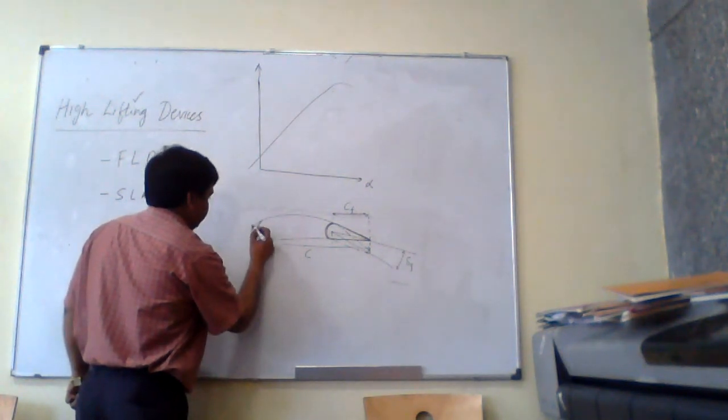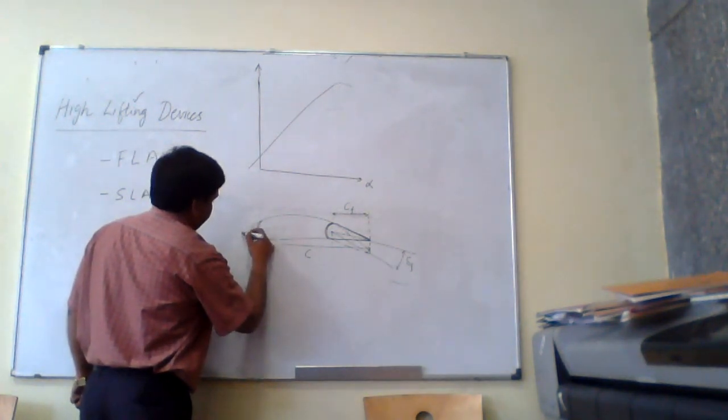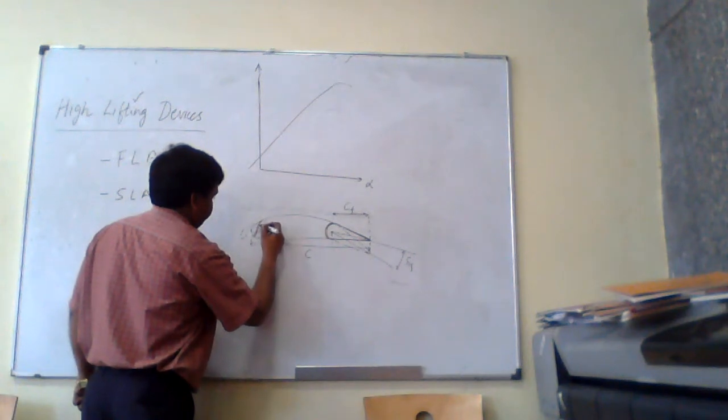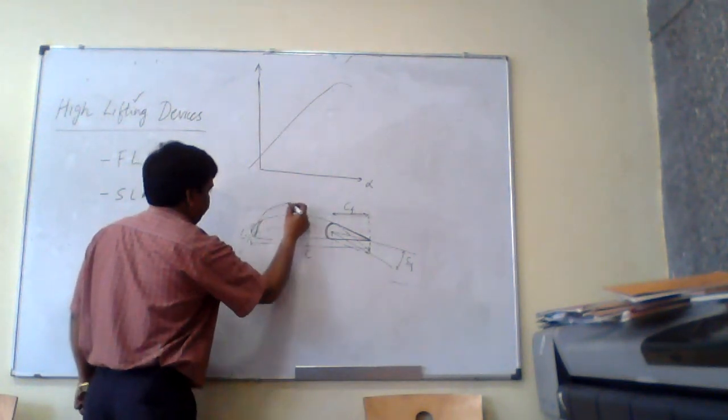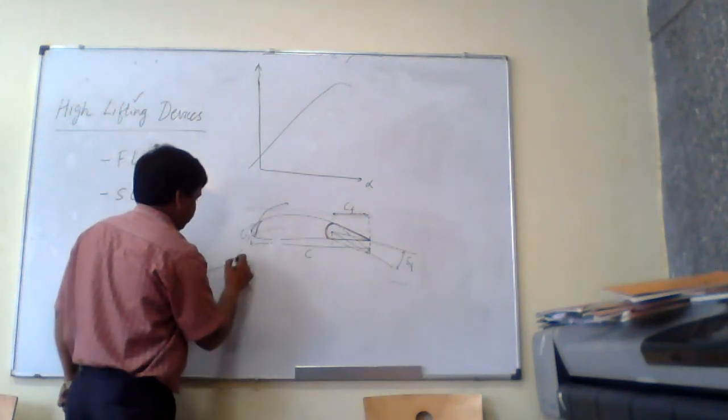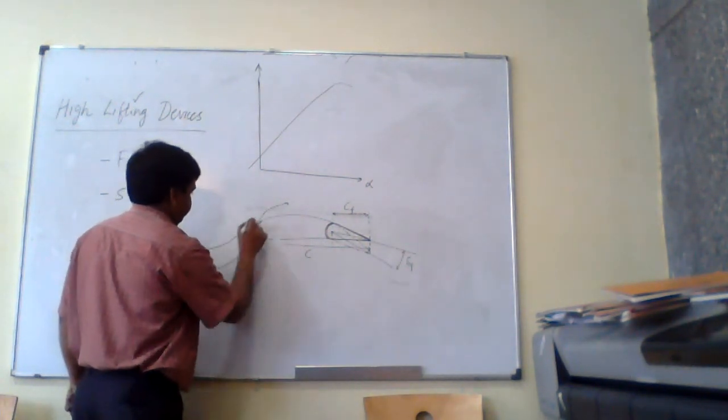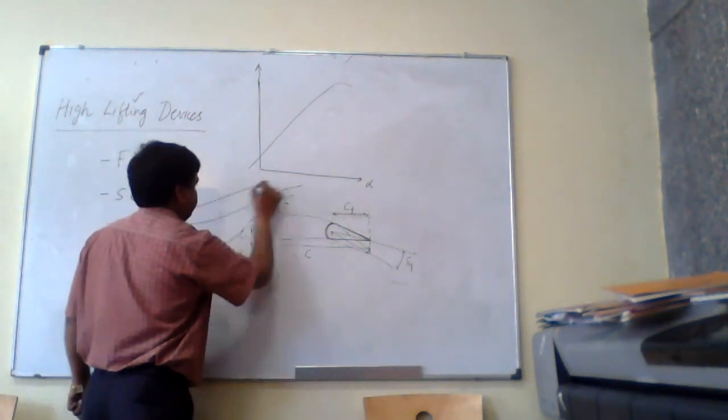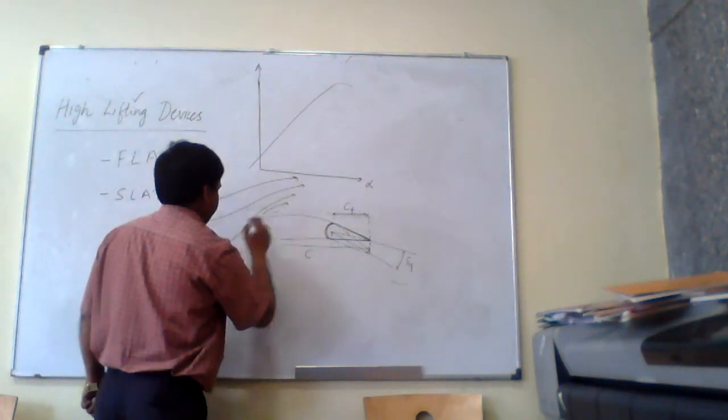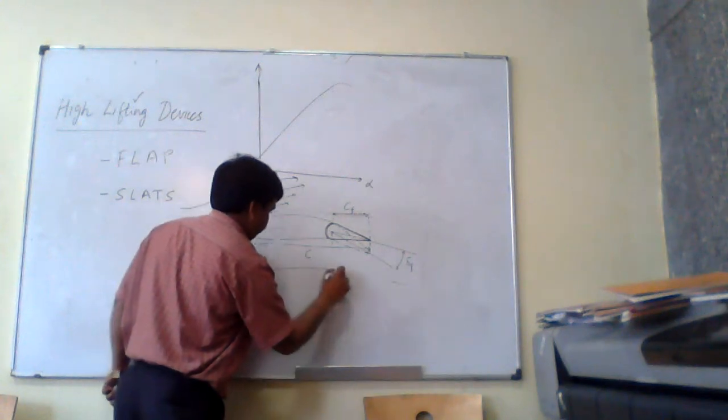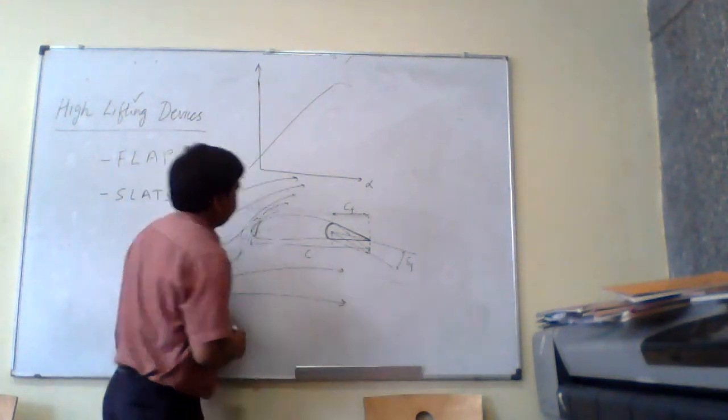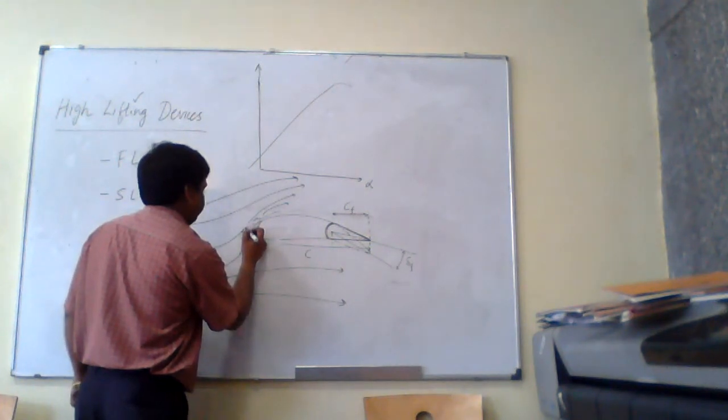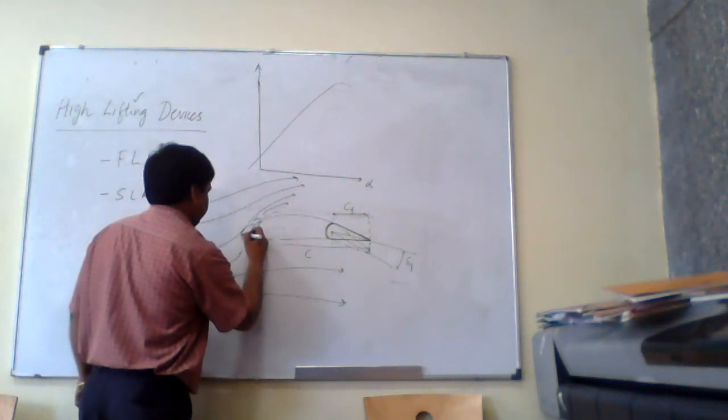So this slat will extend something like this. There will be gap created, this much, for the flow to pass, isn't it? The flow is coming like this, it will pass.